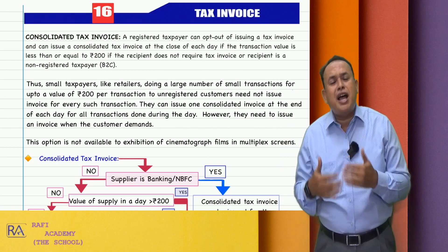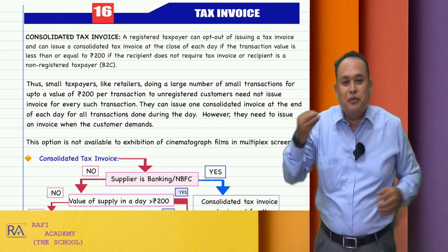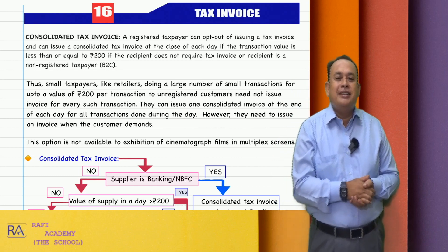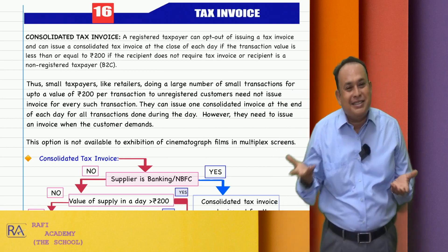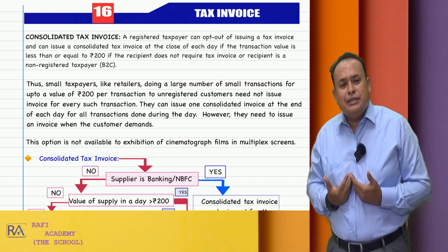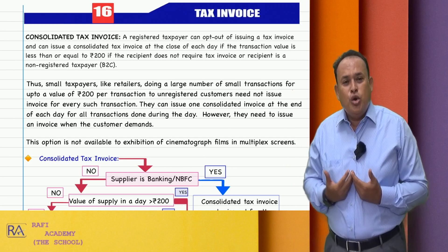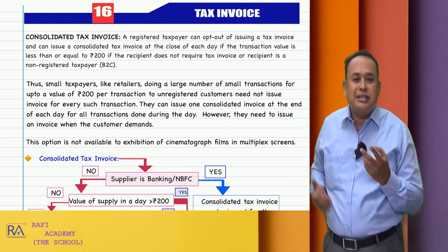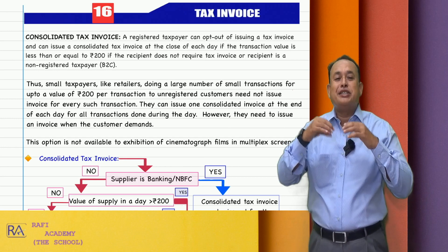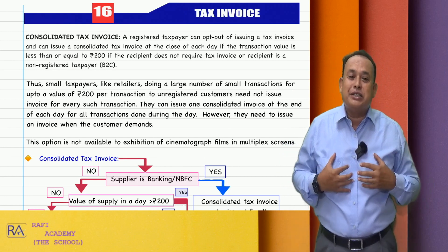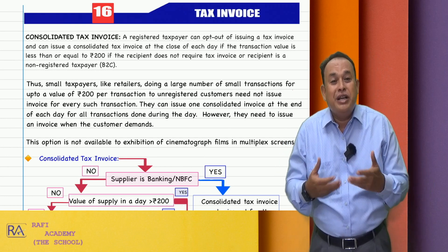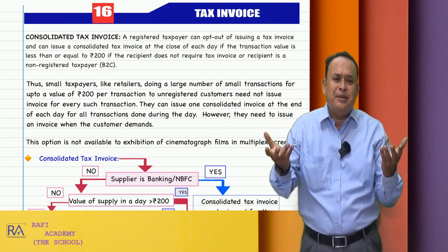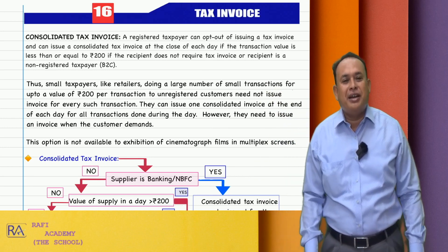The number of transactions in a day is huge, but the value per transaction does not exceed 200 rupees at any circumstance. In such cases, a Rafi Tea Stall whose aggregate turnover in the previous year is more than 20 lakh rupees in the state of Tamil Nadu got registered with GST law. Such a Rafi Tea Stall provides tea and coffee to customers who are basically unregistered persons — like CA, CMA, CS students coming for tea.